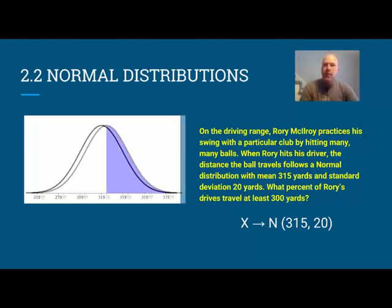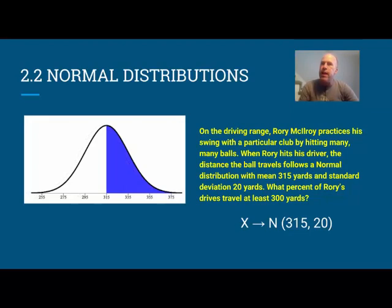The first thing we see here, so we start to shade it in, we see that about 50% of Rory's drives will be 315 yards or more, and about 50% will be below that, because we can use the density curve to represent the percentage and the probability here.